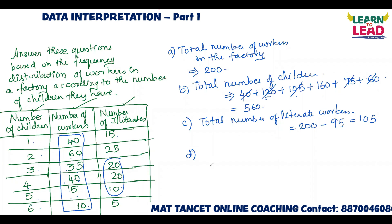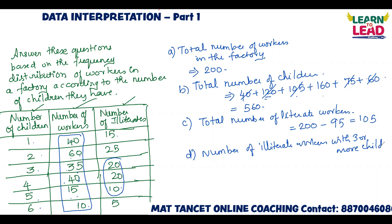Next: how many illiterate workers have three or more children? In total there are 95 illiterates. For three or more children, add the last three column values — three, four, five, six children. Adding those gives 55. So 55 is the answer.